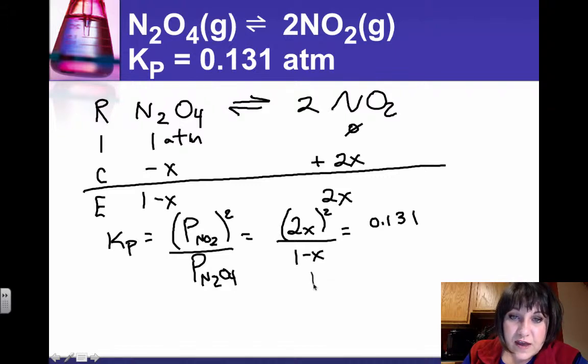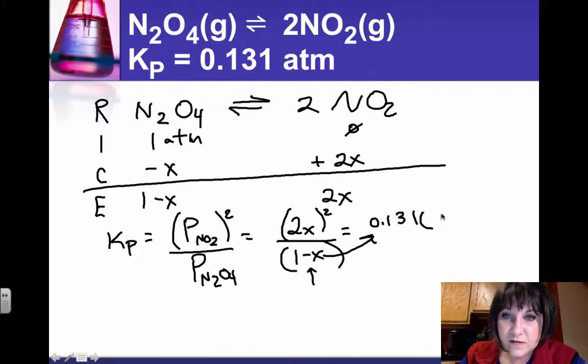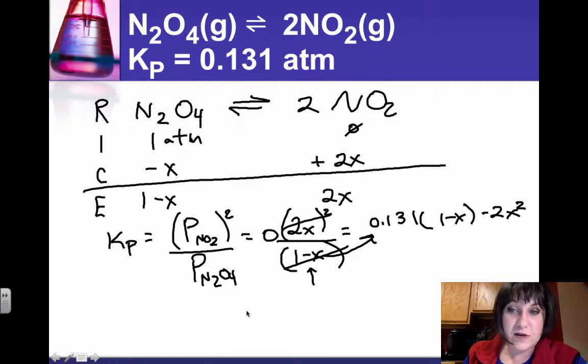And you notice I have a minus x, so you might consider doing the small x assumption. But remember, with a mid-range value for Kp, that's not an option for us. So I'm going to rearrange by multiplying this across. So multiply both sides by 1 minus x, and then subtract the 2x squared term so that I have 0 on one side of the equation. Now I can put it into my quadratic equation solver. So let's get the calculator.